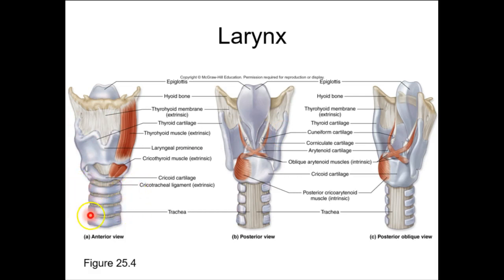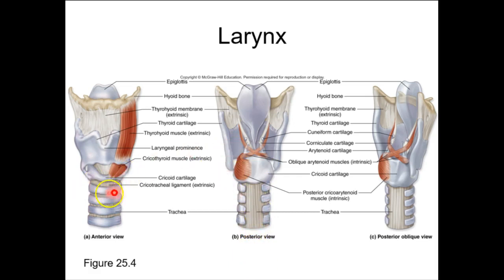Your trachea is going to have C-shaped cartilaginous rings. They are incomplete on the posterior view — they do not go all the way around. Why not a complete ring? Because your esophagus is right back there, and that food bolus is going to push into that space, so the posterior wall is soft to allow for the movement of food. The C-shaped cartilaginous ring maintains tracheal patency — openness. It is hyaline cartilage, so it's intermediate in strength.